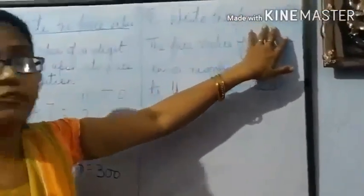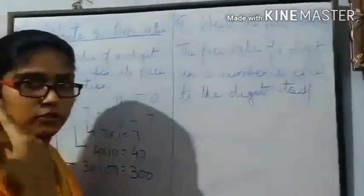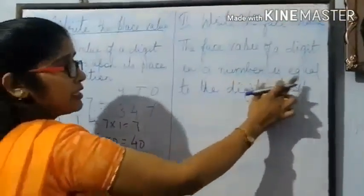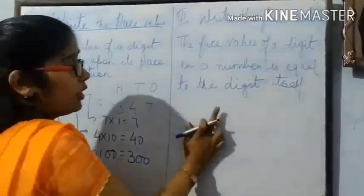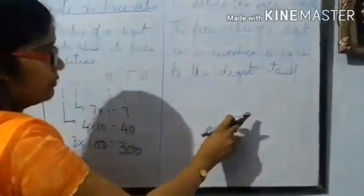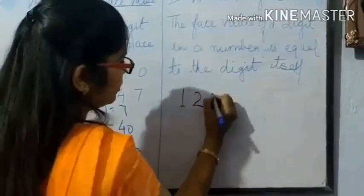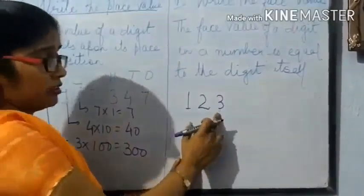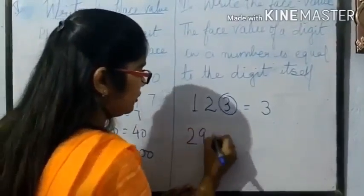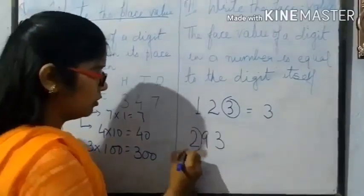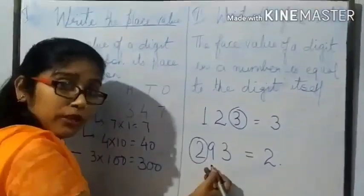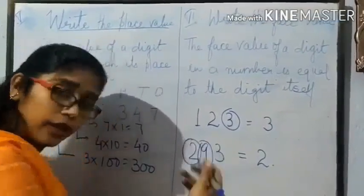Next question: write the face value of the given number. The face value of a digit in a number is equal to the digit itself — whatever digit is given, its face value is that digit. So the face value of 3 is just 3. In 293, the face value of 2 is 2, the face value of 9 is 9.